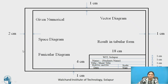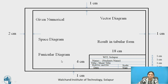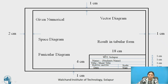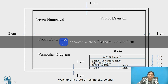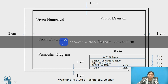This is the layout of the sheet. First, plot a margin: leave a 2 cm margin on the left side and 1 cm on the remaining three sides. At the top left corner, draw the given numerical; below that draw the space diagram; below the space diagram draw the funicular diagram. At the top right corner draw the vector diagram, and below the vector diagram show results in tabular form. At the bottom right corner, draw a name plate of 18 cm by 4 cm. Write the college name in the first row, student name in the second row, title of the sheet in the third row, followed by roll number, division, date, scale used for the vector diagram, and space for the teacher's signature.